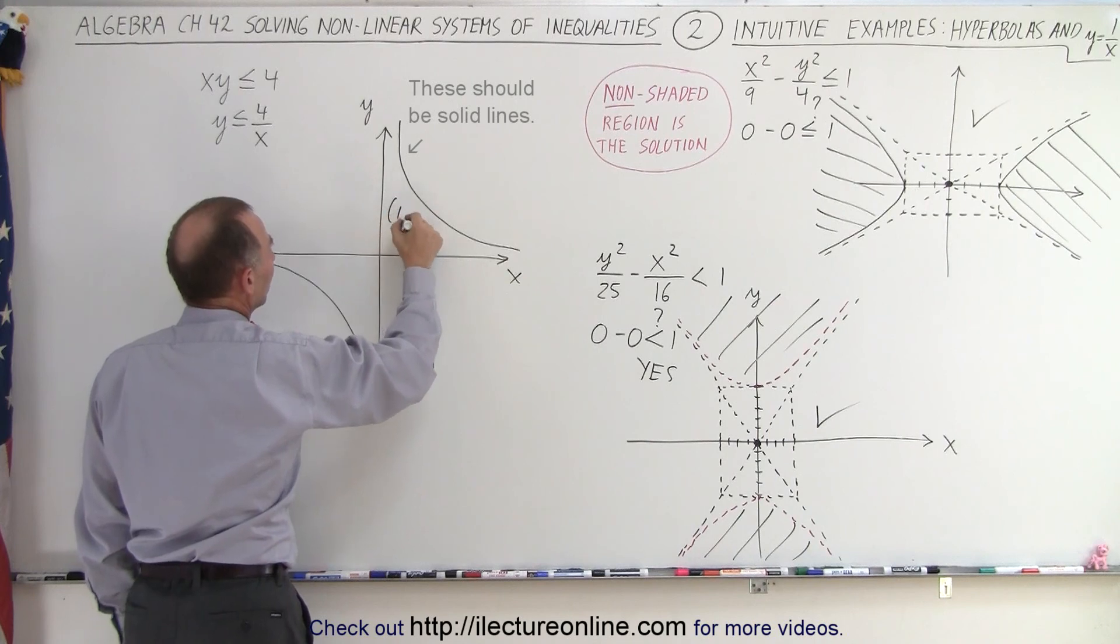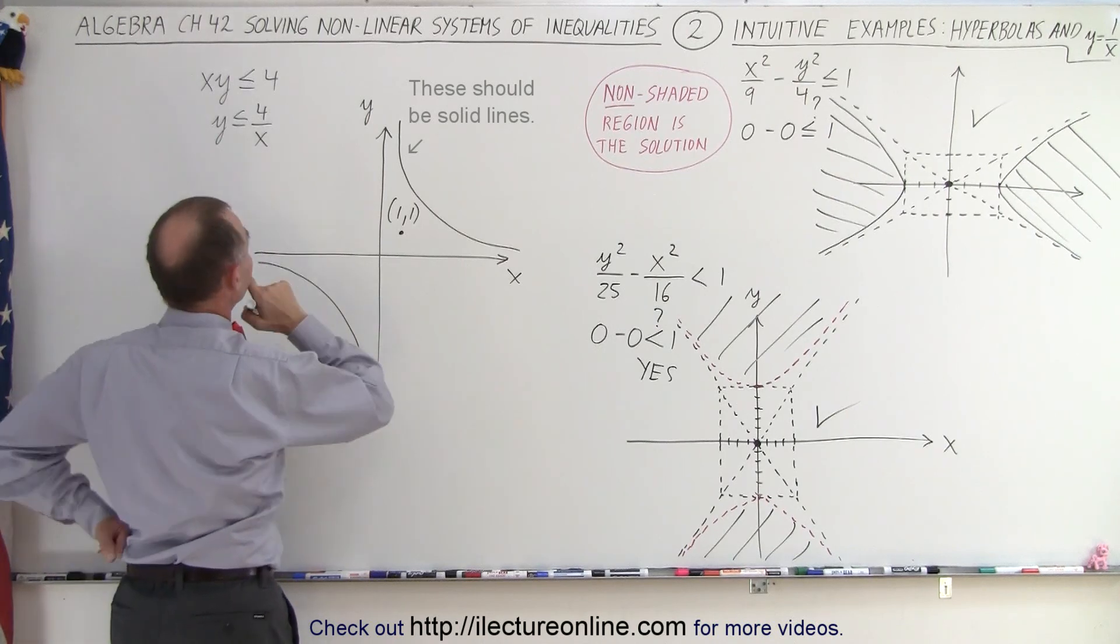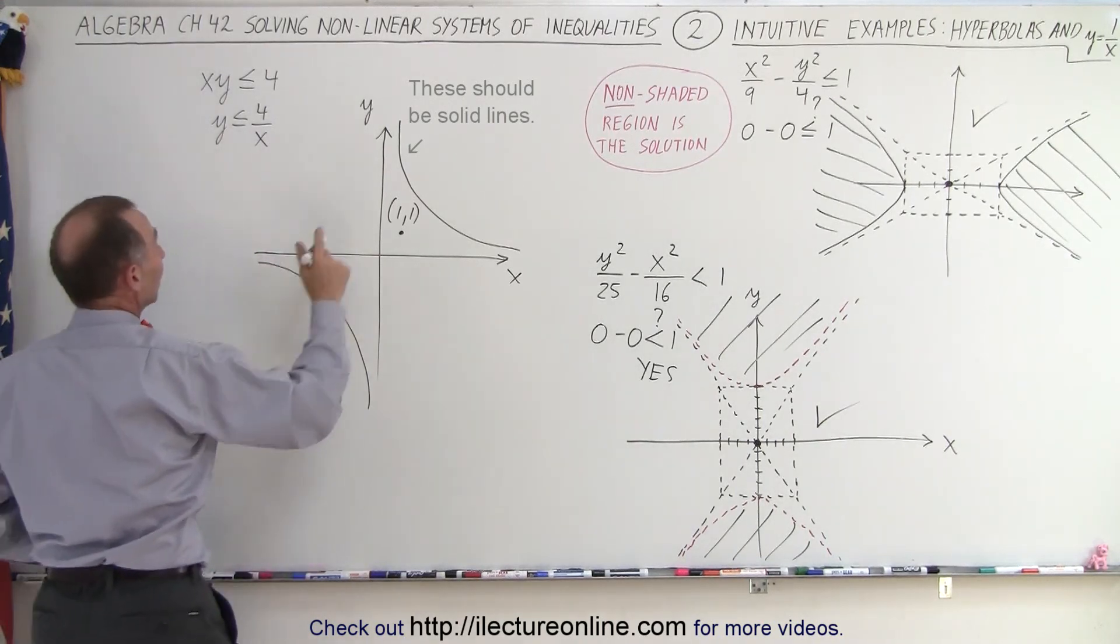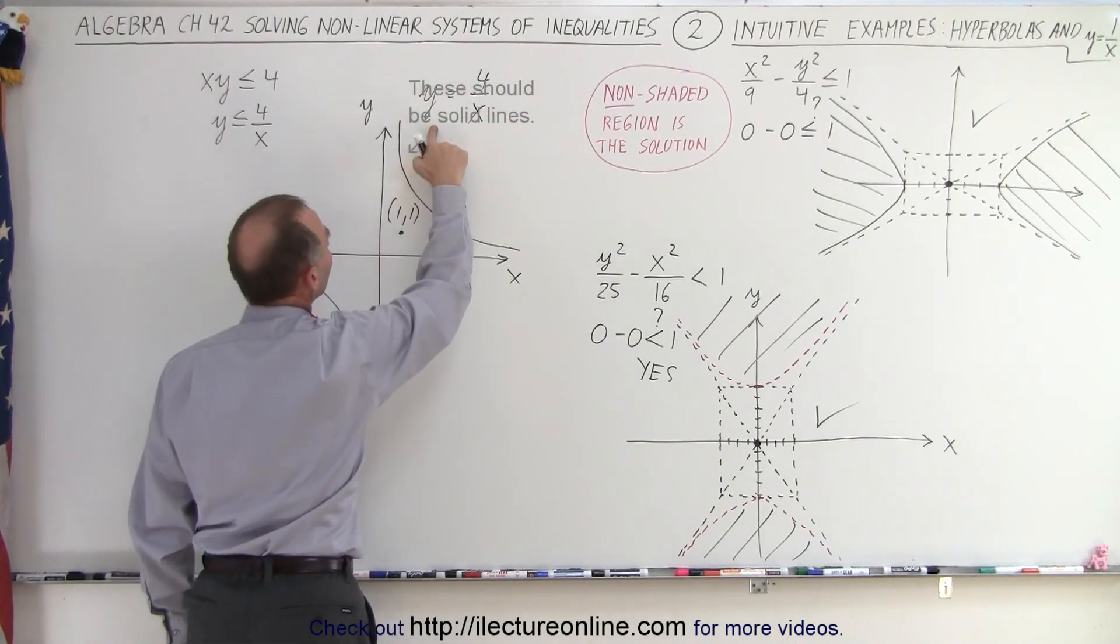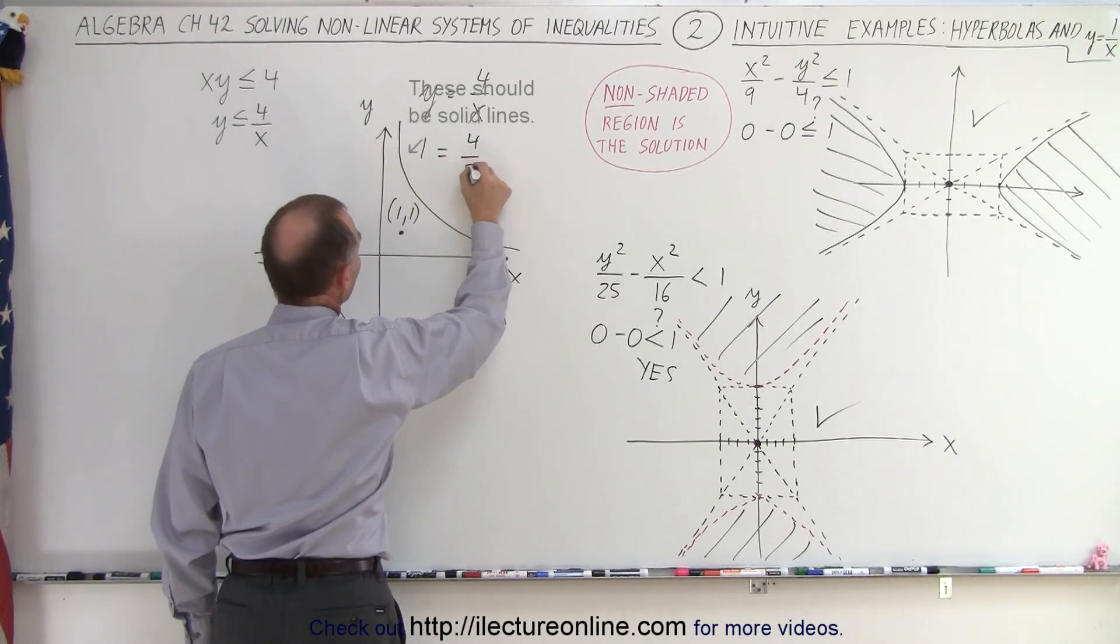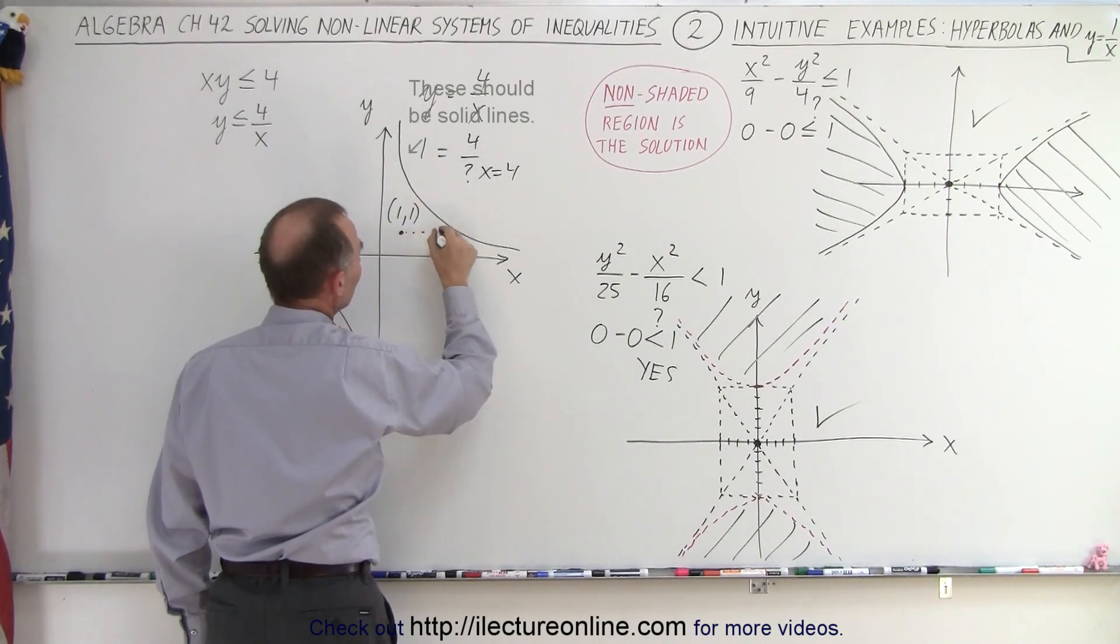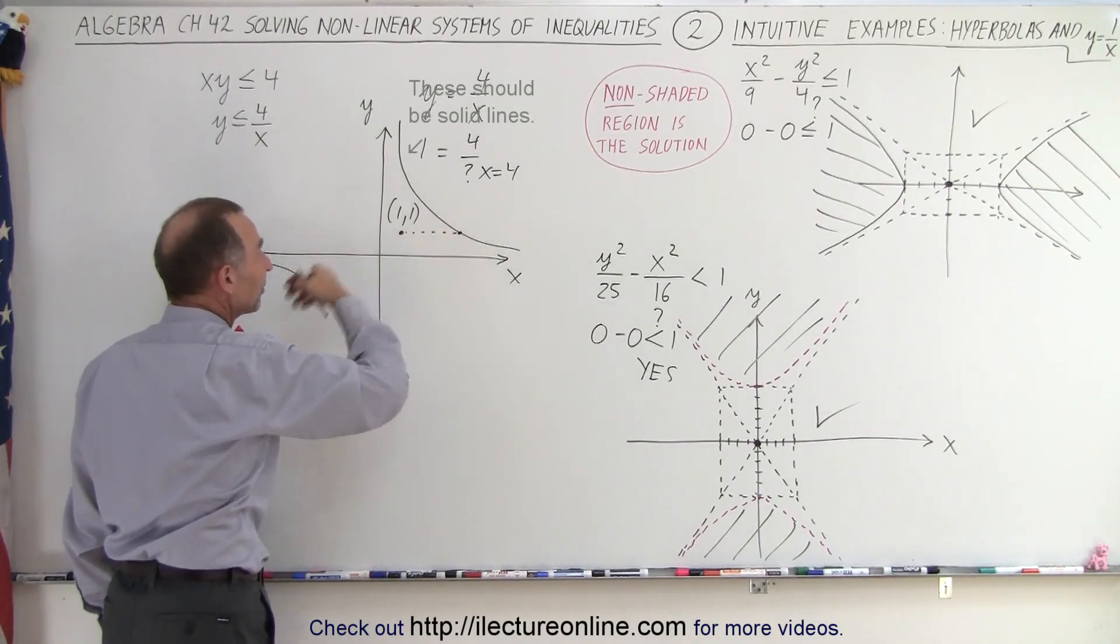Let's find the boundary. We have y equals 4 over x. If y equals 1, what should x equal? 1 equals 4 divided by x, so x equals 4. When y equals 1, x must be 4 to be on the boundary, so the point (1, 4) is right there. By choosing the point (1, 1), we're on this side of that boundary.